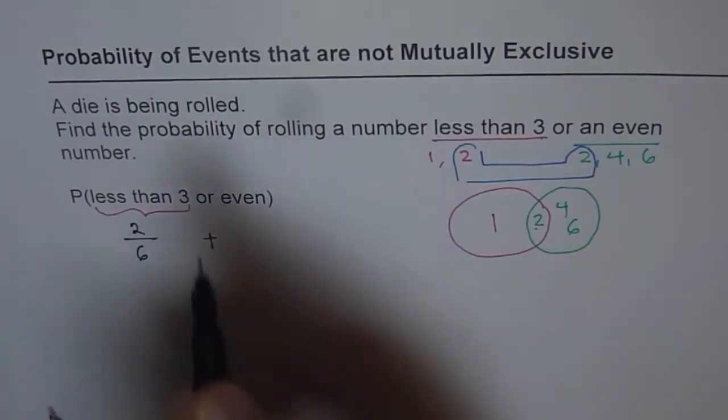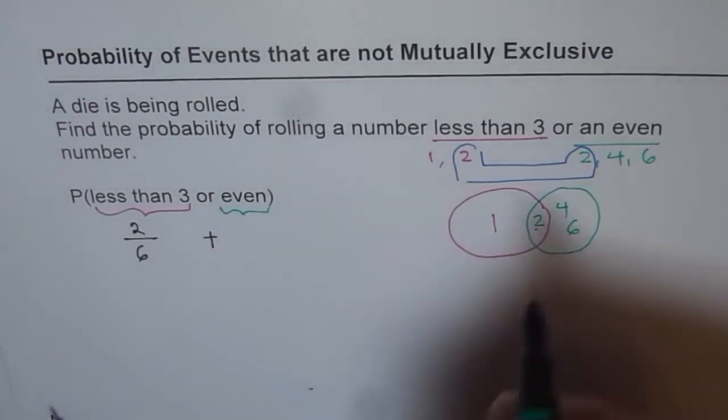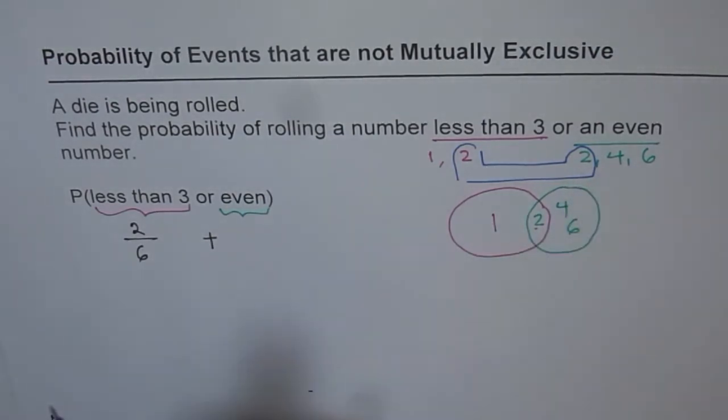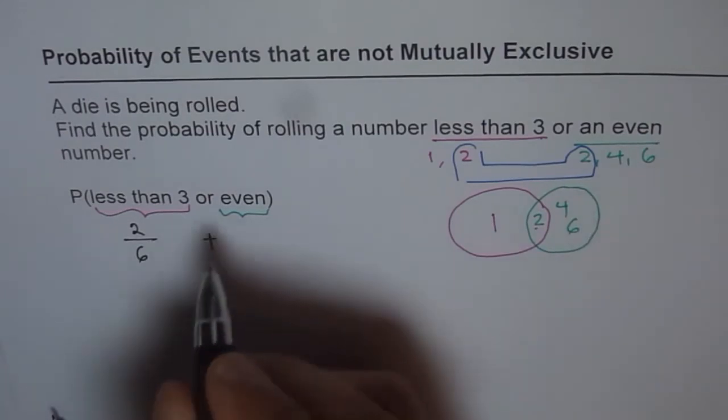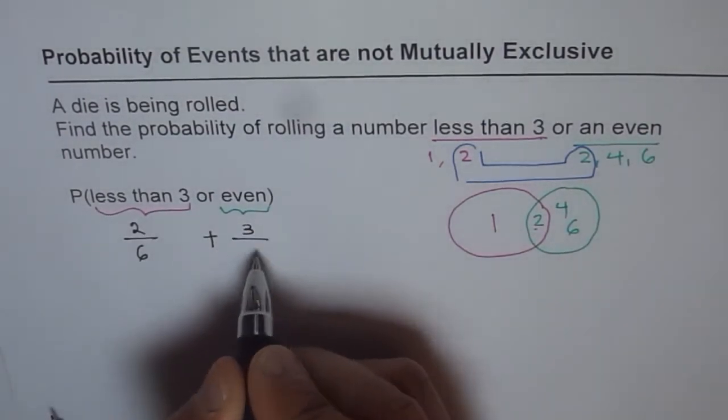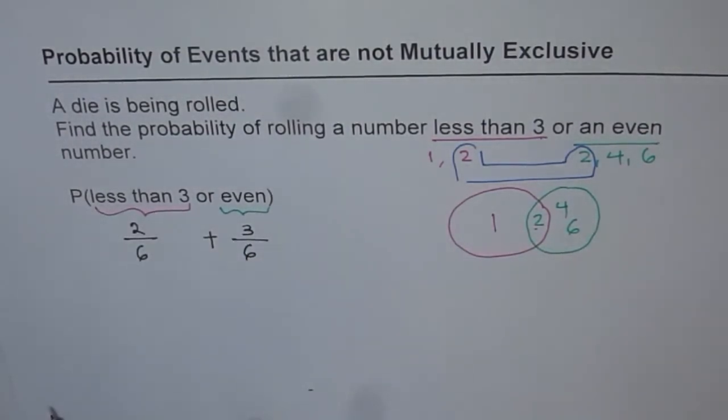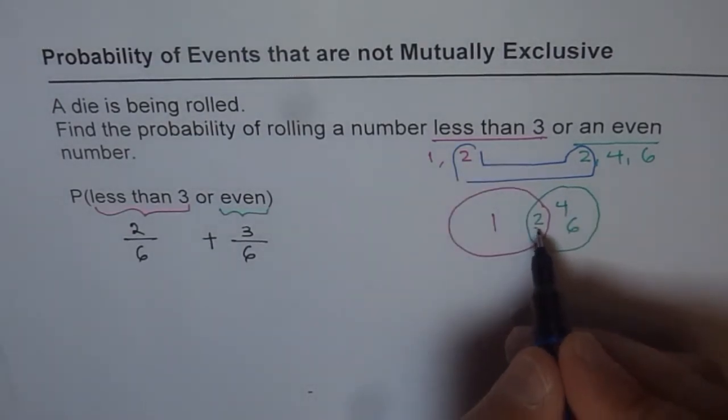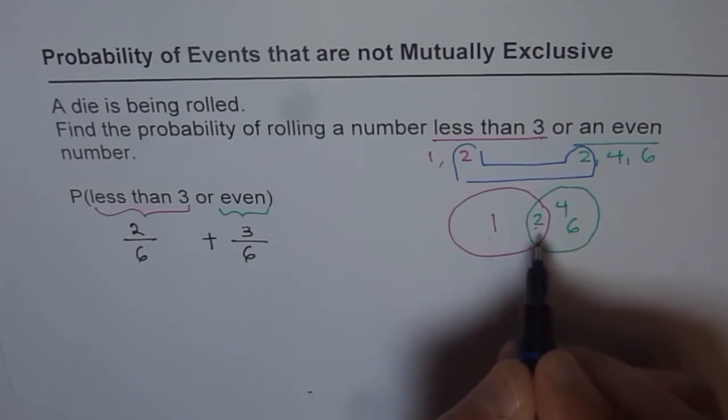Or even numbers. So what is the probability of even numbers? There are 3 even numbers. So the probability of even numbers is 3 out of 6. There are 3 even numbers out of 6. But what do we see here? We see that the probability of getting 2 has been counted both ways. It is not a mutually exclusive case.